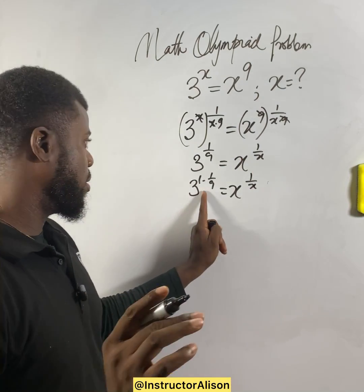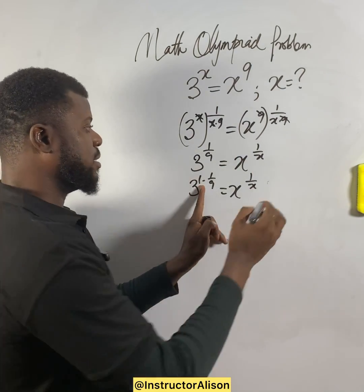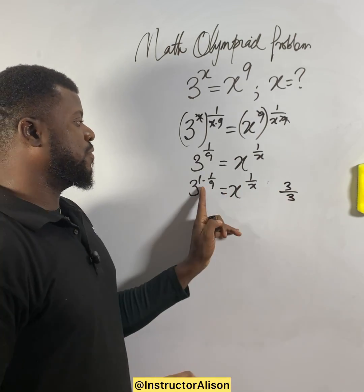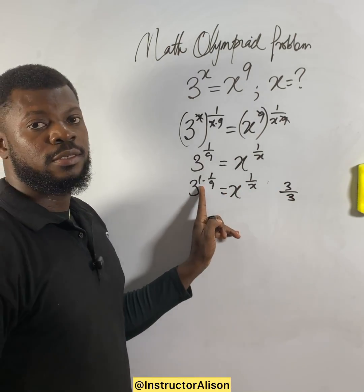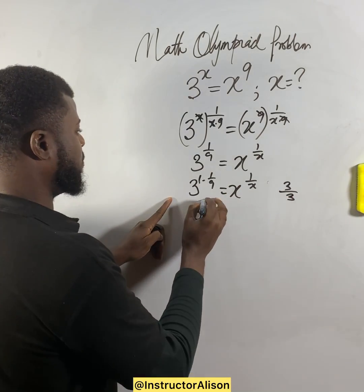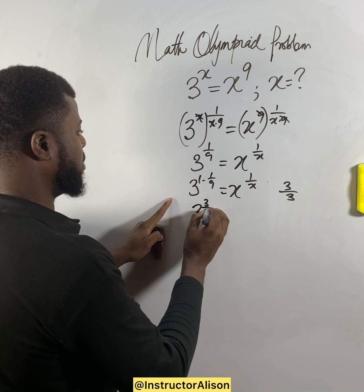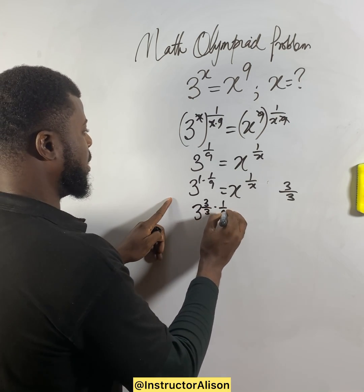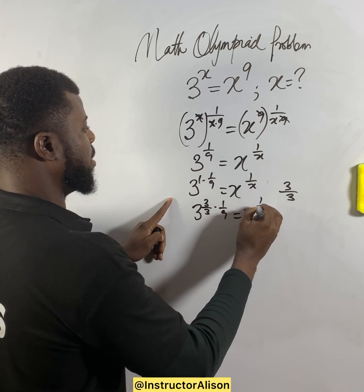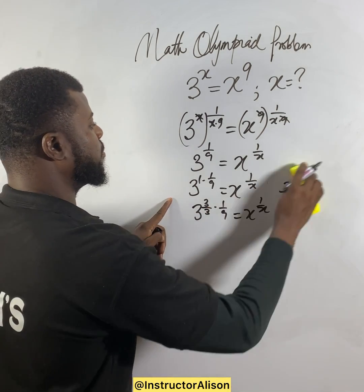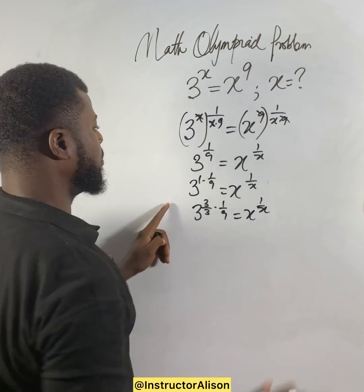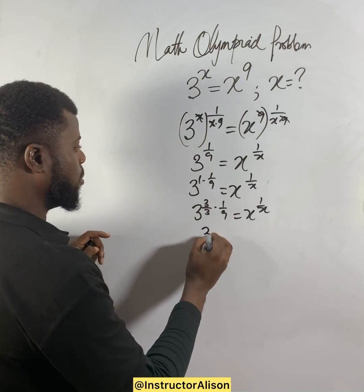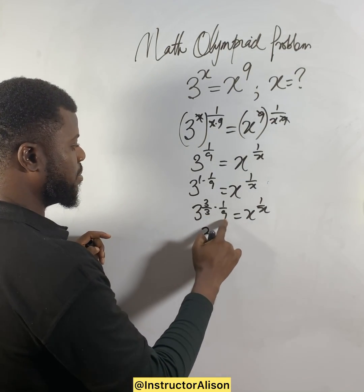Here, 1 is the same thing as 3 over 3 — 3 divided by 3 will be 1. So I'll just say 3 to the power of 3 over 3, dot 1 over 9, equal to x to the power of 1 over x. So let's say 3 to the power of 3 times...